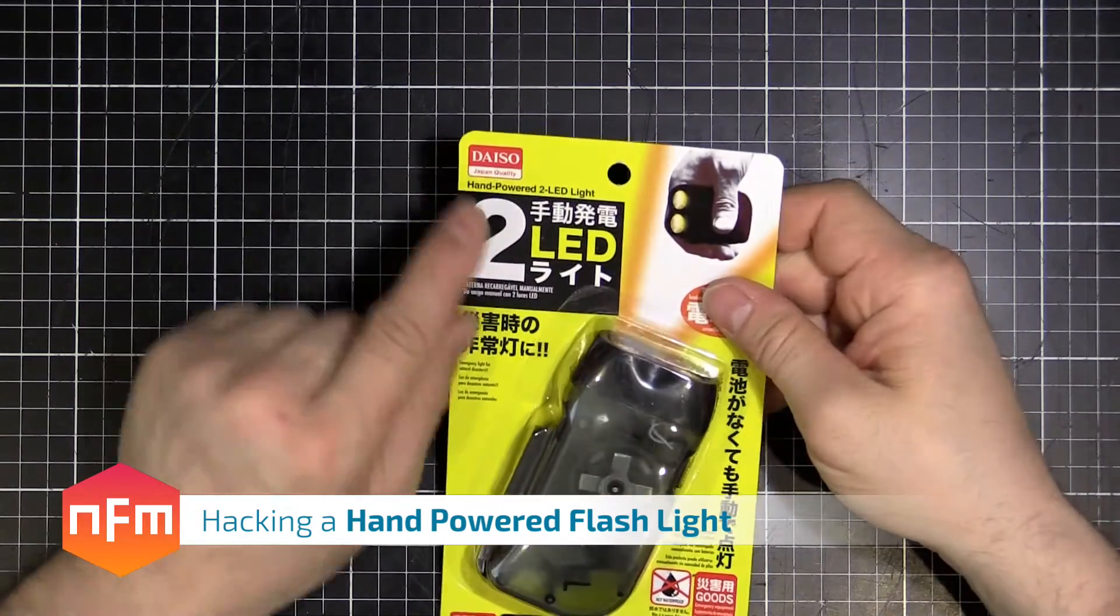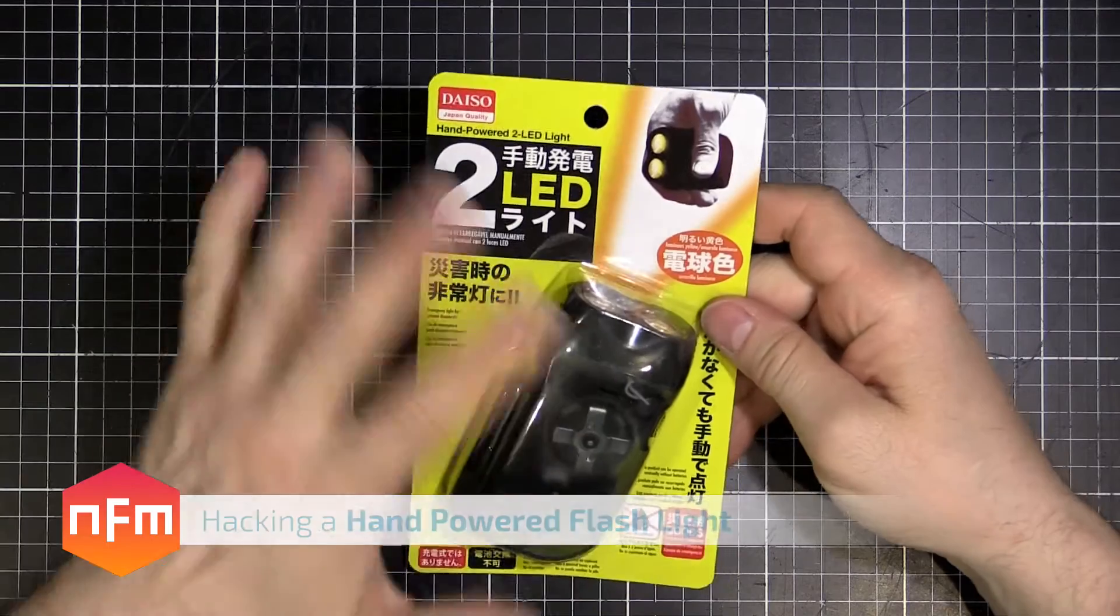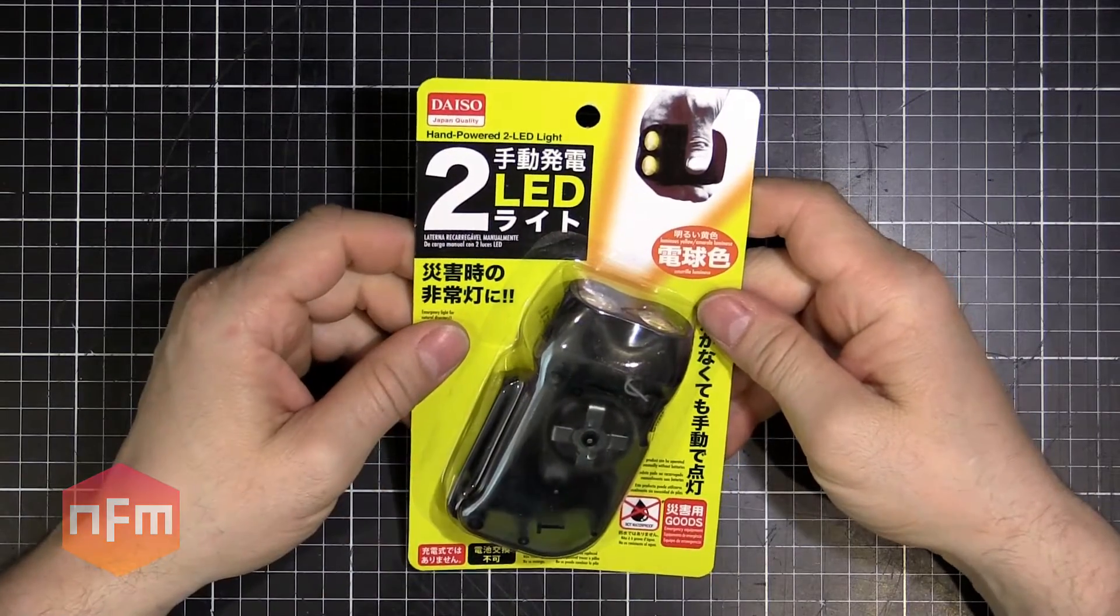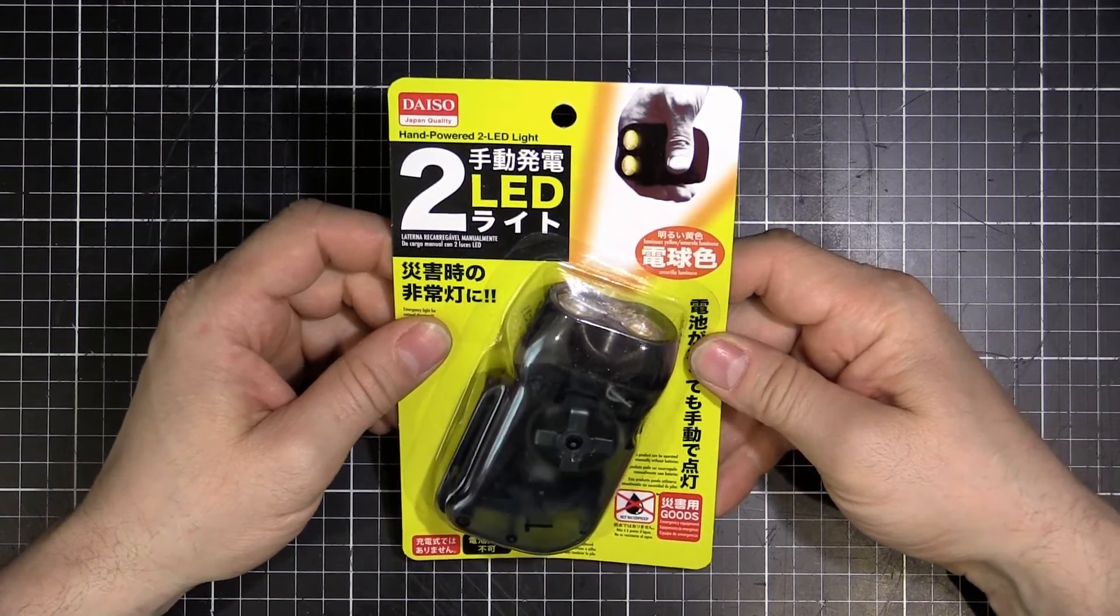Hey guys, just headed down to the local Daiso, which is a Japanese kind of dollar store. They do sell some more expensive things than a dollar, but I picked up this, which cost me about 108 yen. That's basically a dollar plus 8% tax.